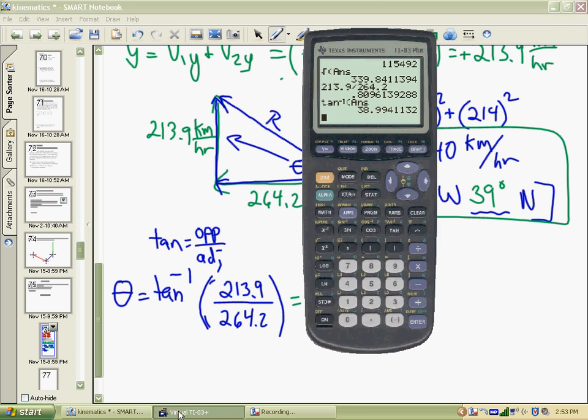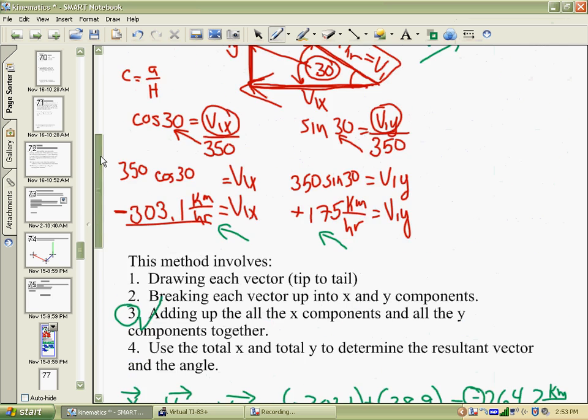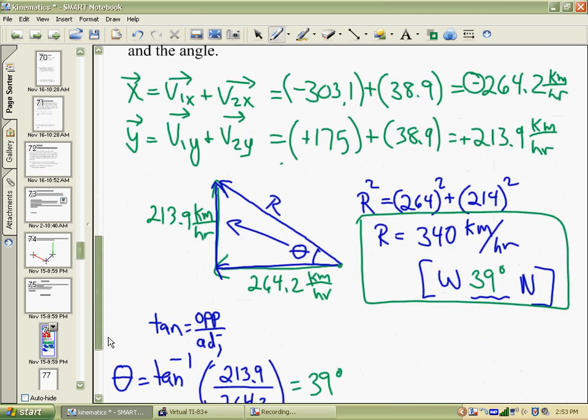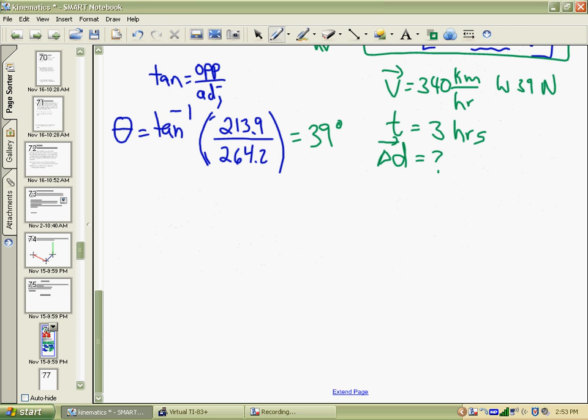We have enough time to do part B. Part B of the question was to determine its displacement after three hours. We're at the end, so we know that the average velocity is 340 kilometers per hour, west 39 north. The time is three hours. The question wants you to determine the displacement. We know that velocity is displacement over time, so displacement is velocity times time.